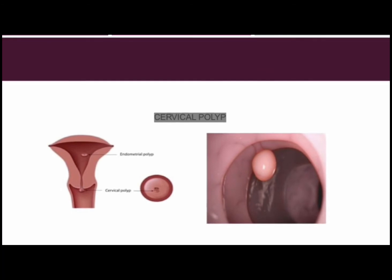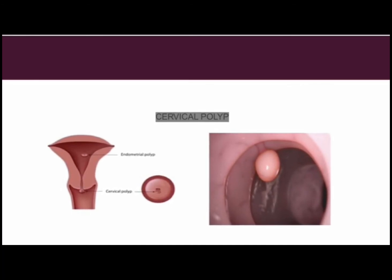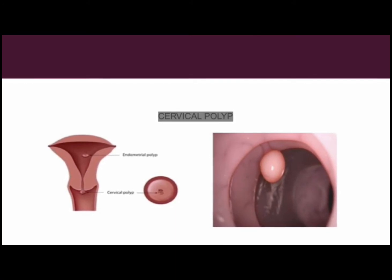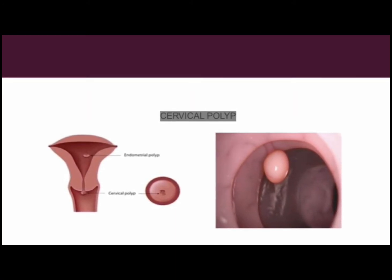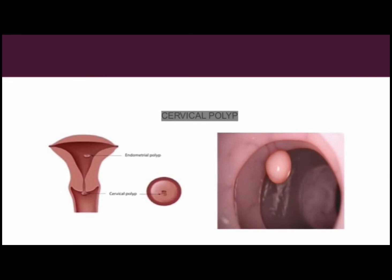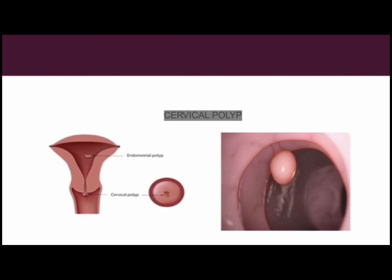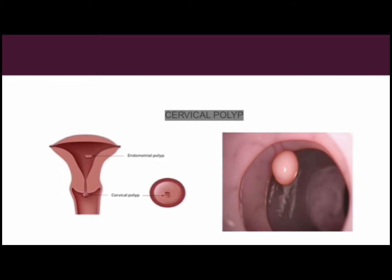The two types of cervical polyps are the endocervical polyp and the ectocervical polyp. The endocervical polyp grows from the glands inside the cervical canal and is the most common form, happening most often in women who have not experienced menopause. The ectocervical polyp grows from the cells of the outer surface layer of the cervix and is more common in women who have experienced menopause.